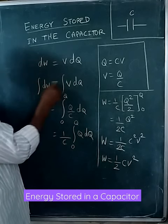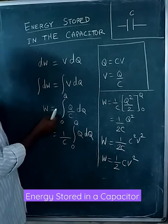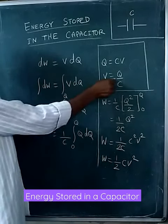V is the voltage. Integrating both sides, this integral and differential gets cancelled. Therefore, work done equals the integral of Q by C times dQ, because V equals Q by C.